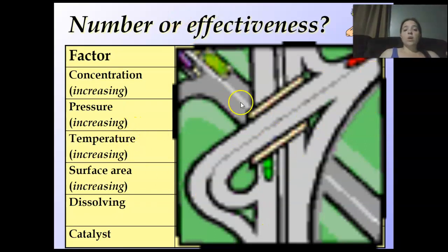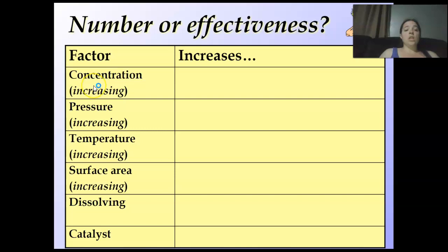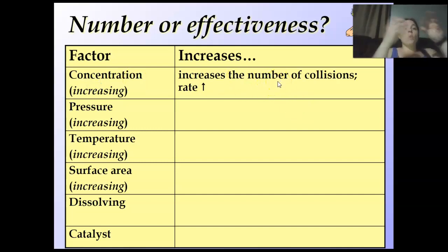Just like a road, we're going to figure out, is the number going to be affected or the effectiveness? Concentration, does it increase the number or the effectiveness? It increases the number of collisions. You throw more in it, you get more collisions. You throw more in it, you get more collisions. You get more head-on collisions, which increases the rate.